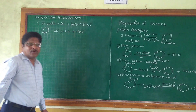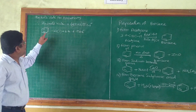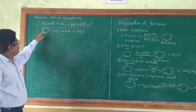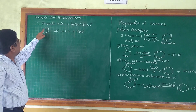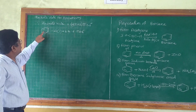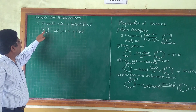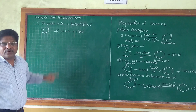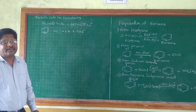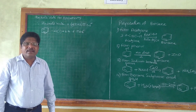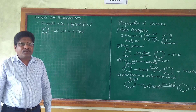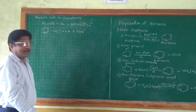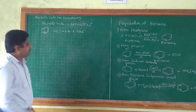In the benzene ring, applying this rule: 4 × 1 + 2 = 6 pi electrons. If we count the number of pi electrons in the benzene ring, we get 2 + 2 + 2 = 6. Therefore, we can say that benzene obeys Hückel's rule.